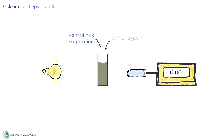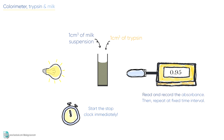Start the stopwatch immediately. Record the absorbance and then do it again at fixed time intervals — for example, every 15 seconds for 5 minutes, or until there is very little change in the reading.